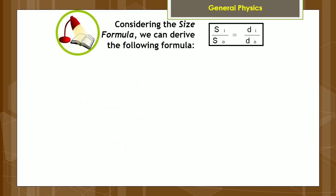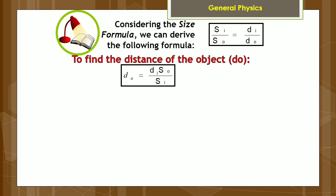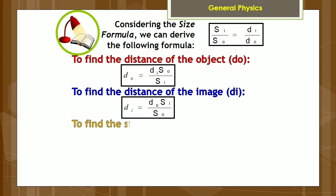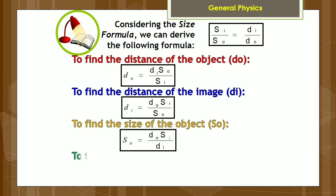Considering the size formula, we can derive the following formulas. The first derived formula is for finding the distance of the object d sub o. The second derived formula is for finding the distance of the image d sub i. The third derived formula is for finding the size of the object s sub o. And the fourth derived formula is for finding the size of the image s sub i.